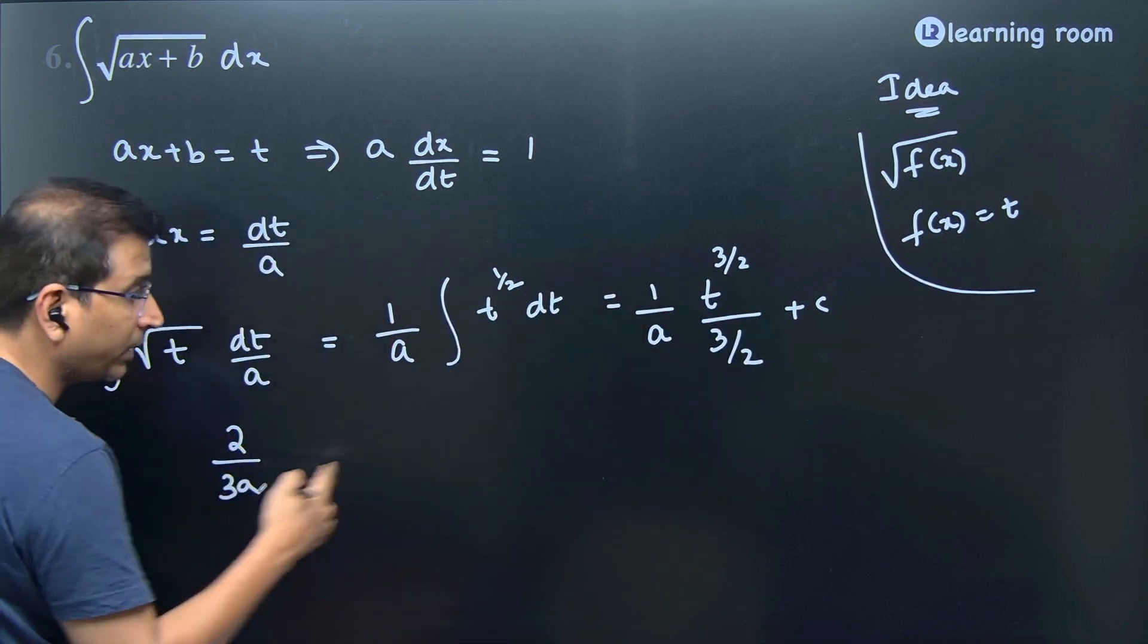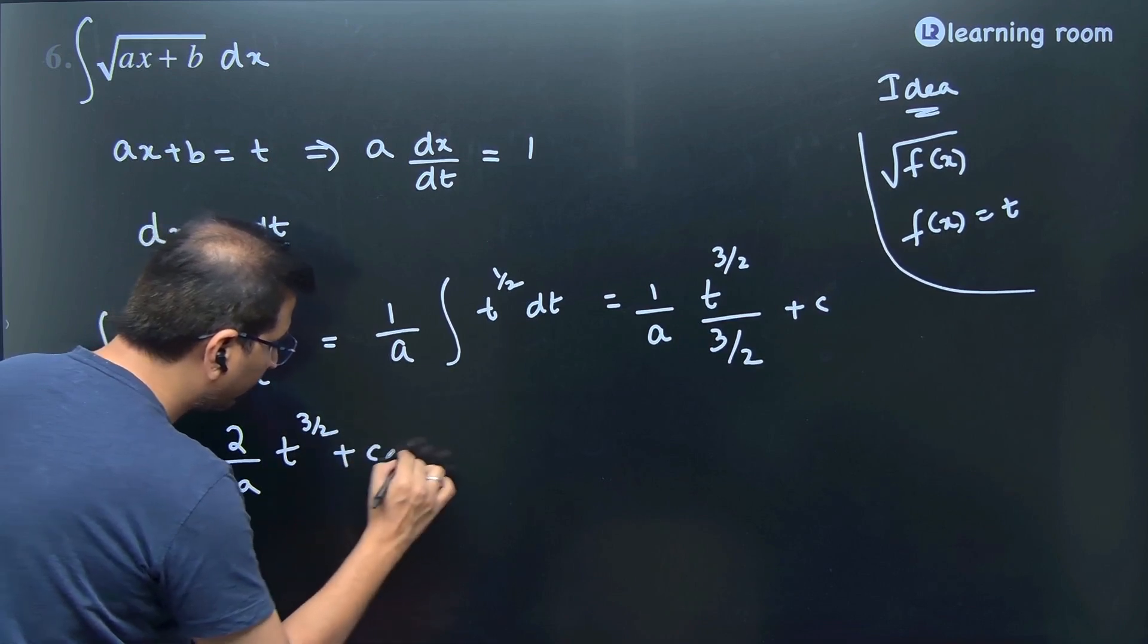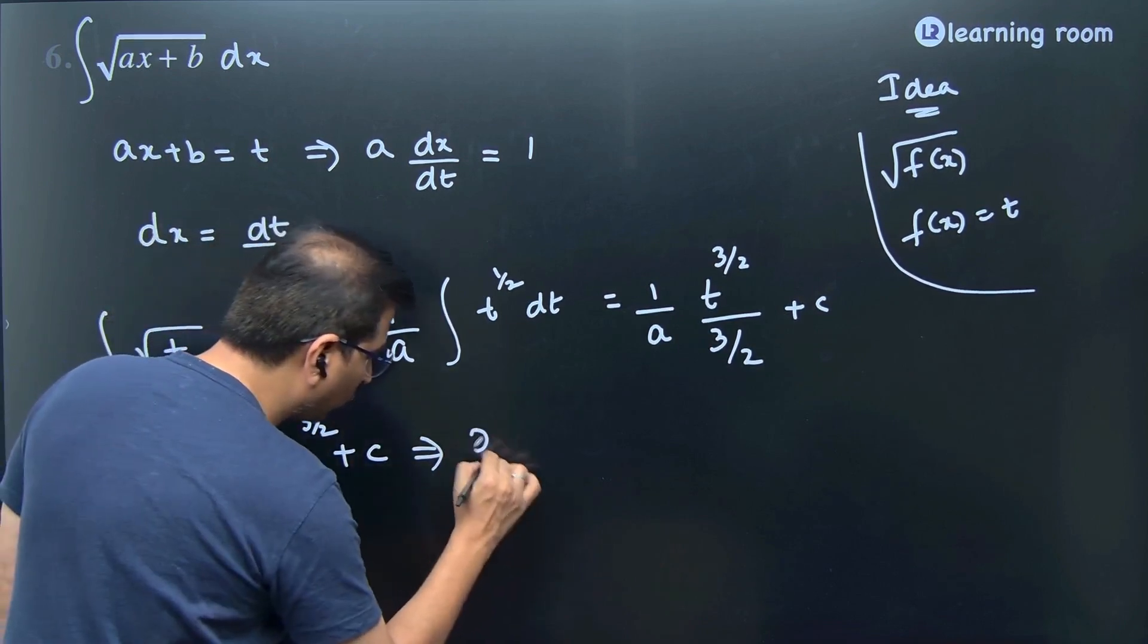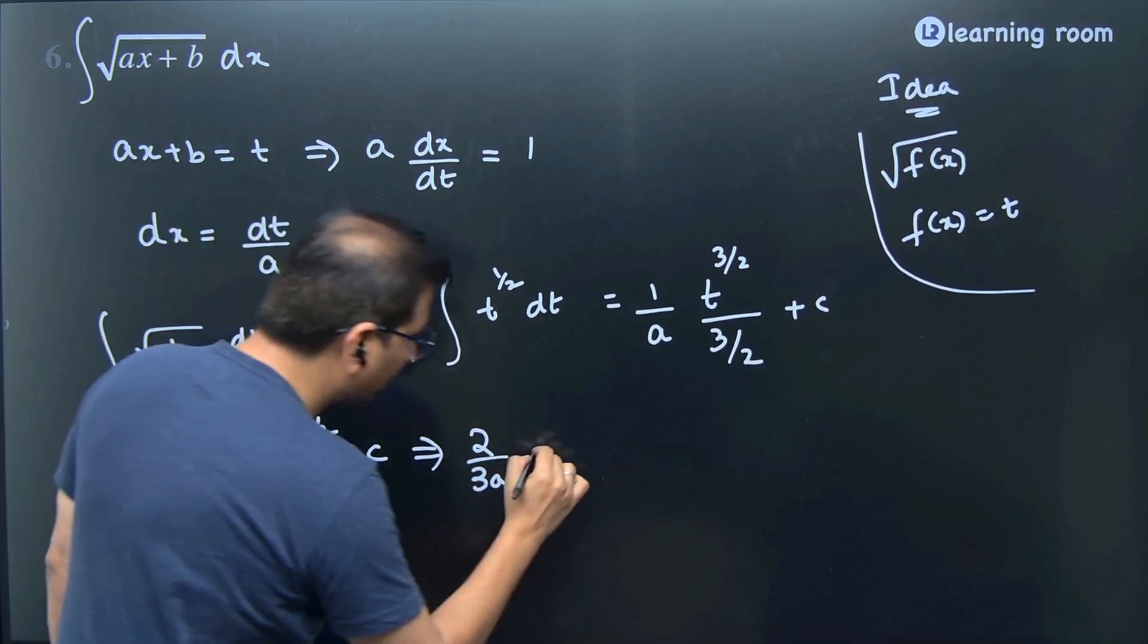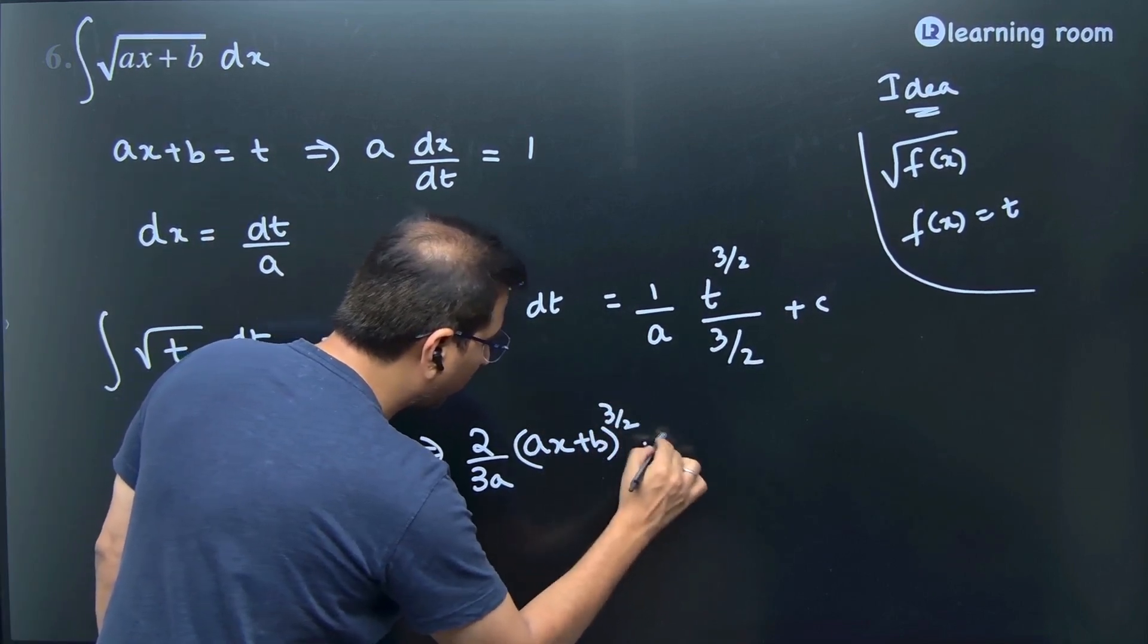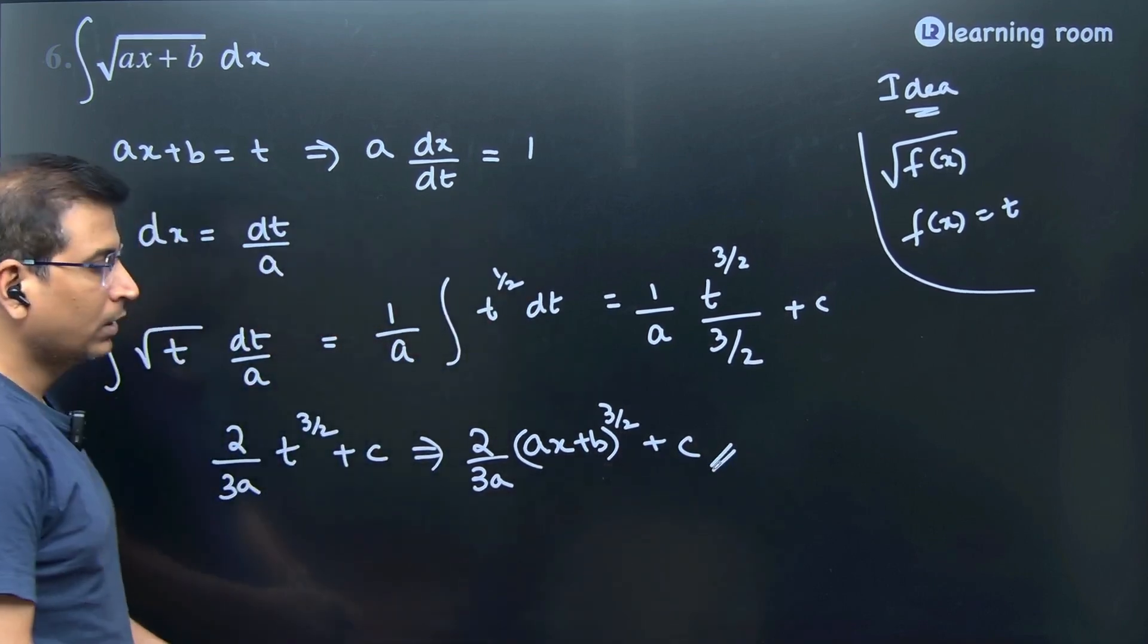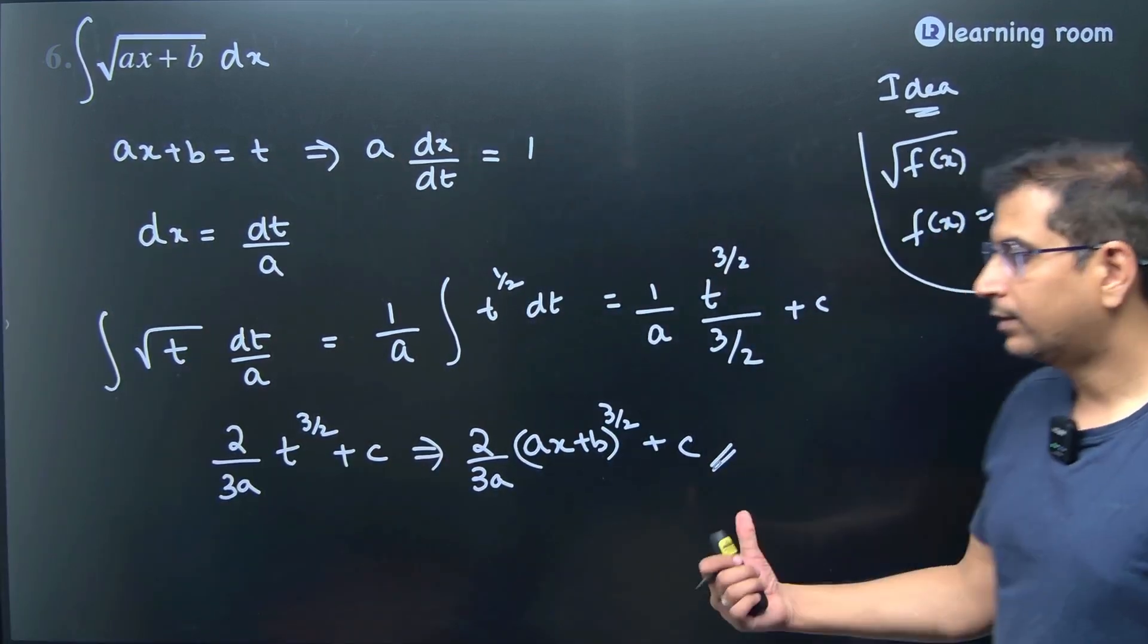So the final answer will be 2 divided by 3a, so this 2 will go to the numerator: 2 divided by 3a into t power 3 by 2 plus c. This is equal to 2 by 3a into t replaced with ax plus b. We get (ax plus b) to the power 3 by 2 plus c. This is the final answer.